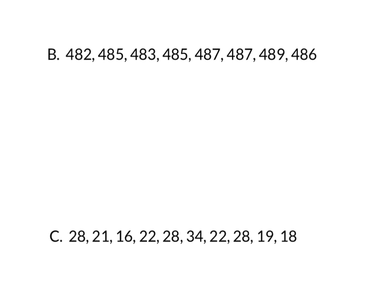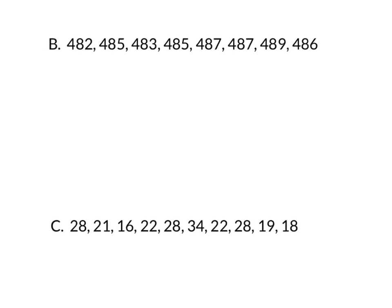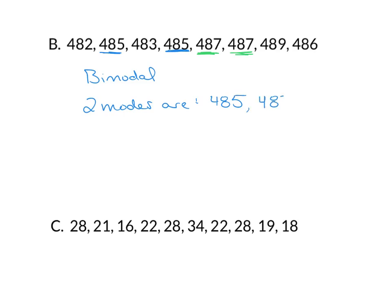For example B, I see 485 appears twice and 487 also appears twice. Nothing else appears more than once. So our mode for this is bimodal, and our two modes are 485 and 487.